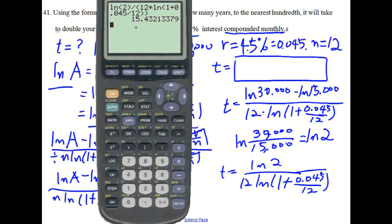So the answer is 15.4321, 3369. But we ask you to write the answer to the nearest hundredth here.